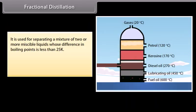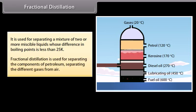Fractional distillation. It is used for separating a mixture of two or more miscible liquids whose difference in boiling points is less than 25K. Fractional distillation is used for separating the components of petroleum, separating different gases from air, etc.